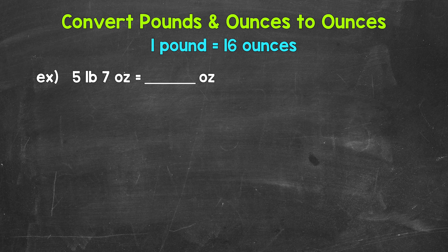Now remember, one pound equals 16 ounces. So when we convert pounds to ounces, we multiply by 16. Let's jump into our example where we have five pounds, seven ounces.